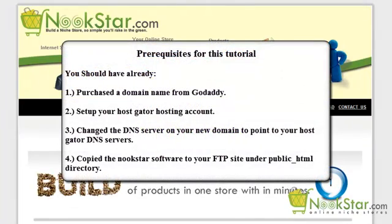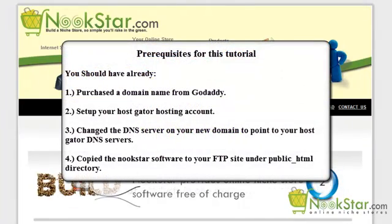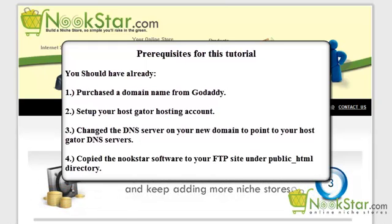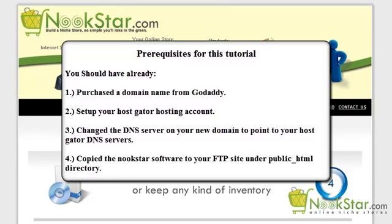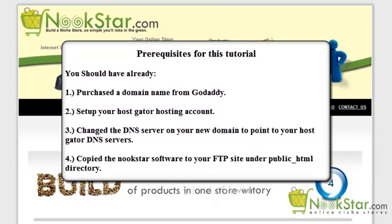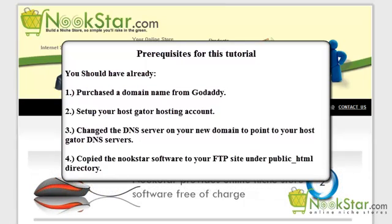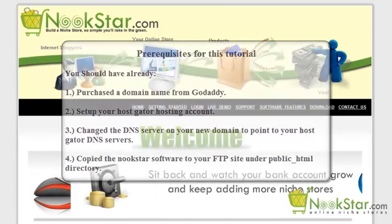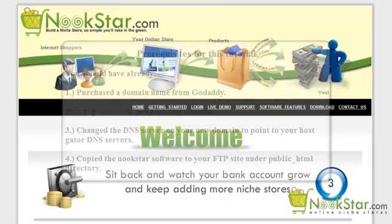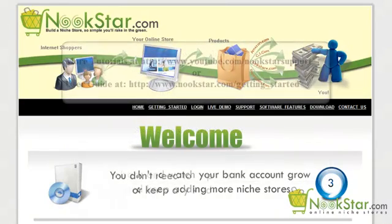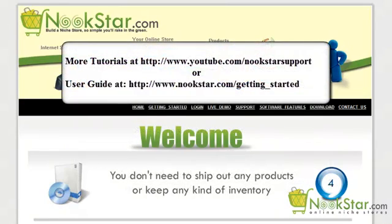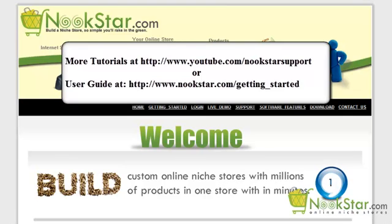At this stage, you should have already: 1. Purchased a domain name from GoDaddy. 2. Set up your HostGator hosting account. 3. Changed the DNS server on your new domain to point to your HostGator DNS servers. 4. Copied the Nookstar software to your FTP site under the public HTML directory. If you have not done all these steps, you can check the Nookstar tutorials on YouTube.com or download the Nookstar user guide PDF file.